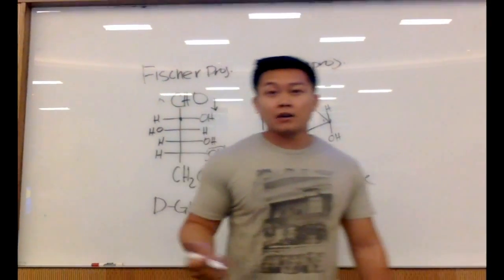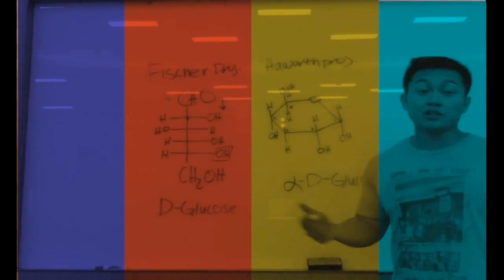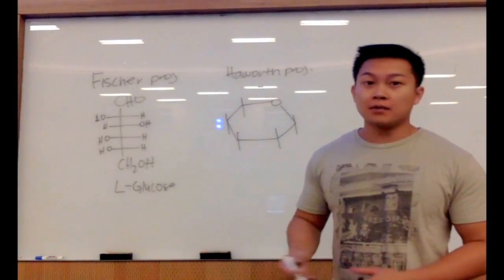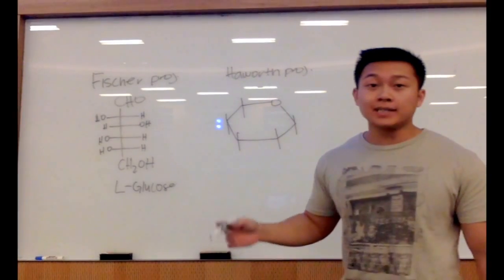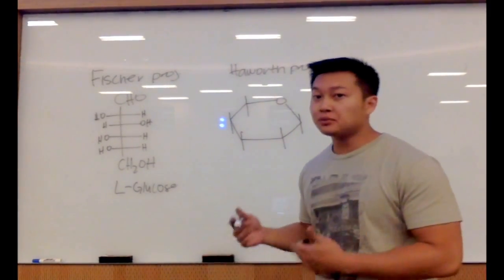All right, now I'm going to show you how to do an alpha-beta-L-sugar. So now we're going to do our L-sugar. We're going to start off with L-glucose. We're going to do basically the same thing we did with our D-sugars. Pretty easy stuff.